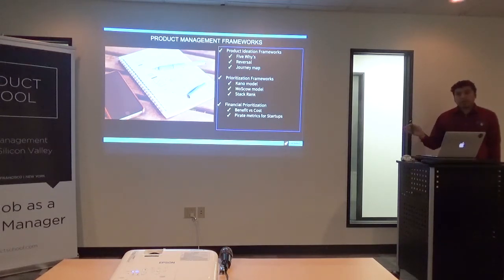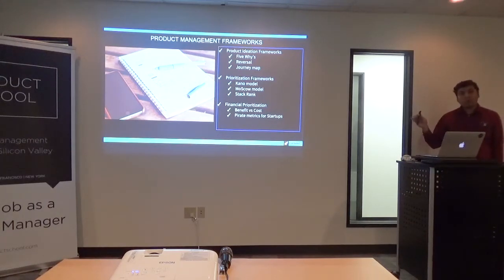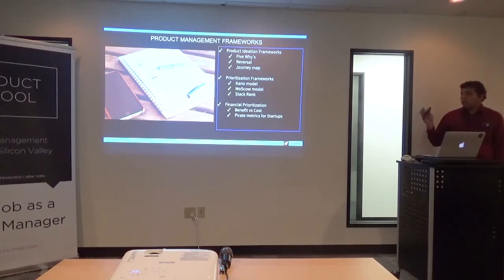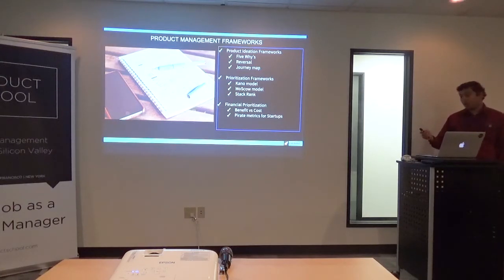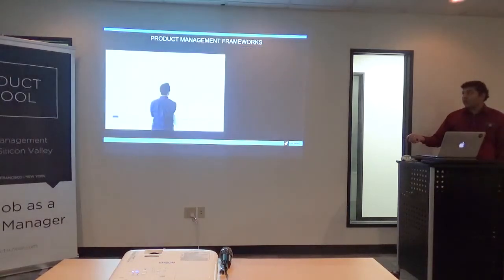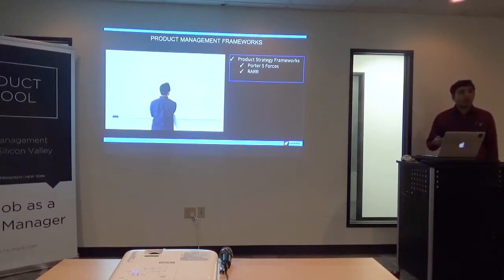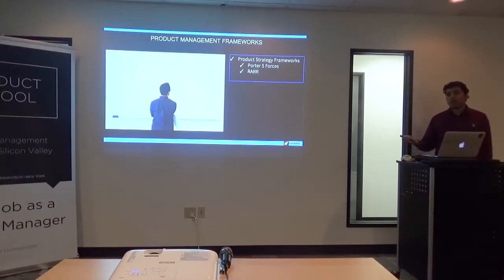We'll also look at prioritization frameworks, which is where most of the heavy lifting happens. We'll look at the Kano model, the MoSCoW model, and stack ranking — because it's really crucial for a product manager to think about different kinds of prioritization. We can also look at financial prioritization, benefit versus cost. We'll look at pirate metrics, which have been around for a long time. And at the very last, we'll look at product strategy frameworks, because in the mature cycle of the product, you'll need to tweak your strategy depending on the product market.